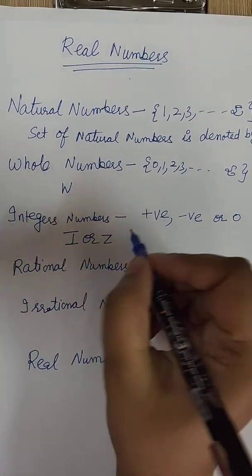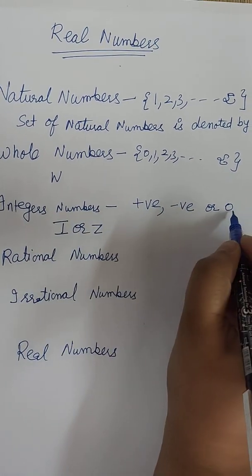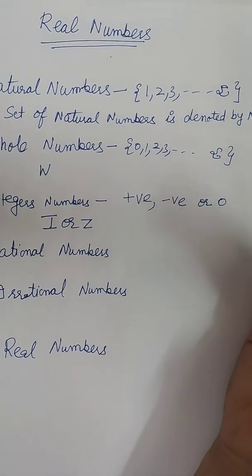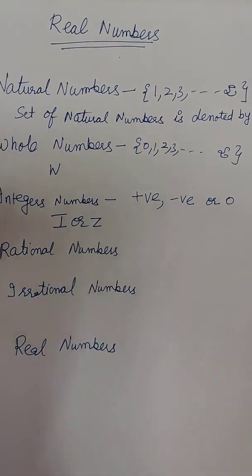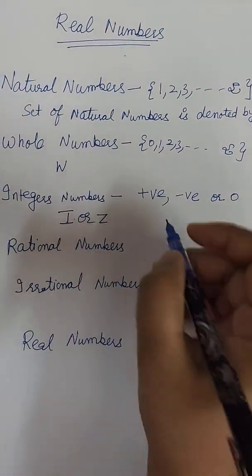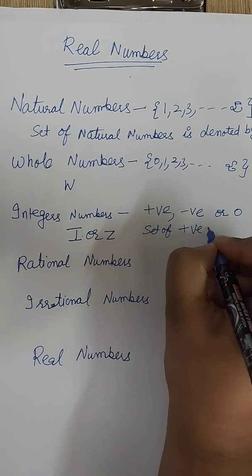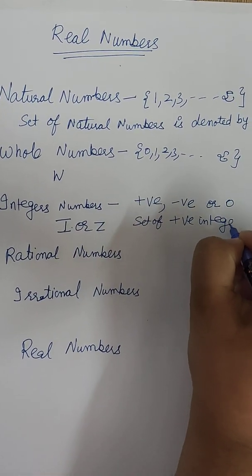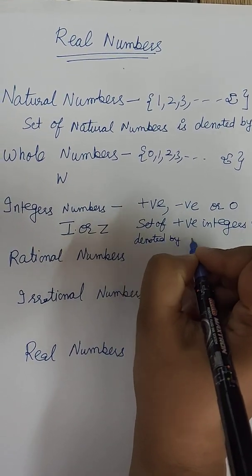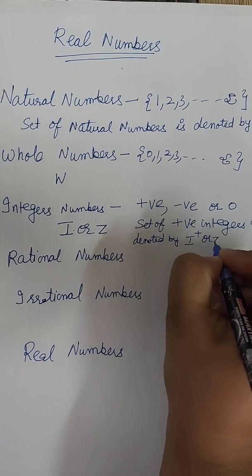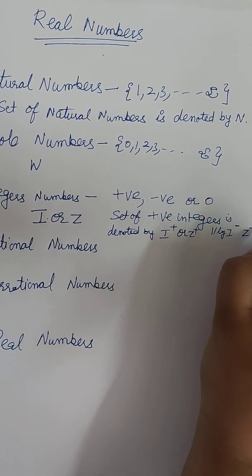And set is denoted by I or capital Z. So here see, there are two types of integers, positive and negative. And 0 is always neutral, because when you are saying 0 means nothing. So it is positive as well as negative. So integer means the set of positive integers. The numbers is denoted by I plus or Z plus. And similarly negative is I minus Z minus.